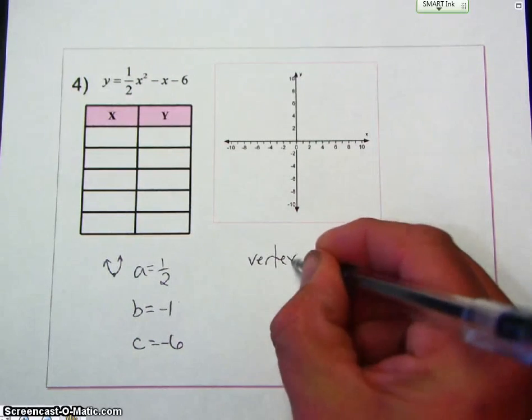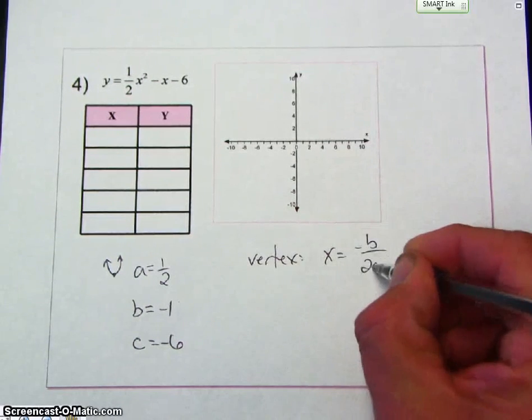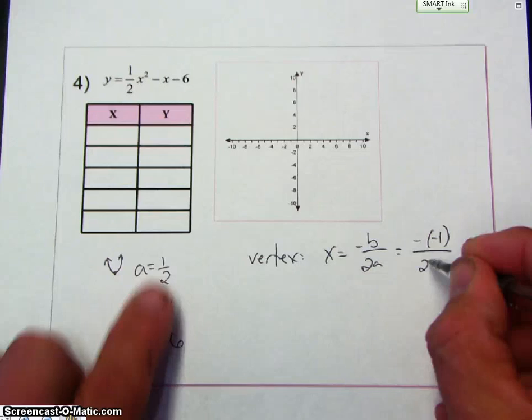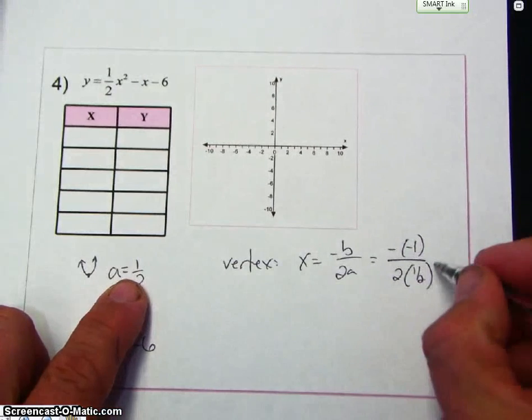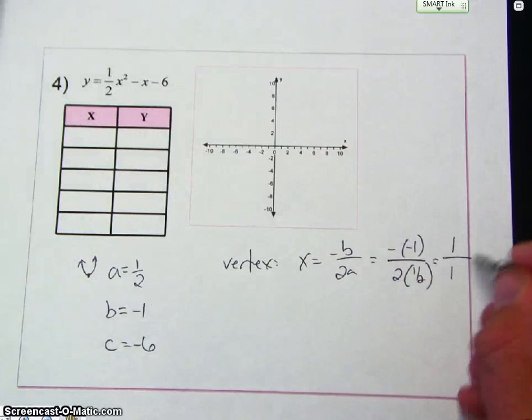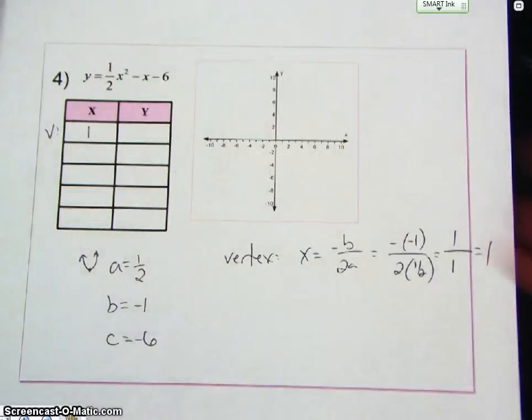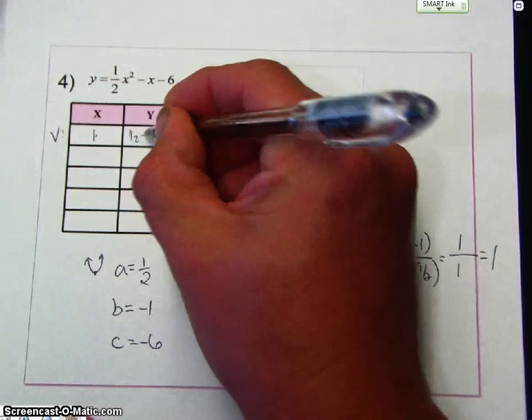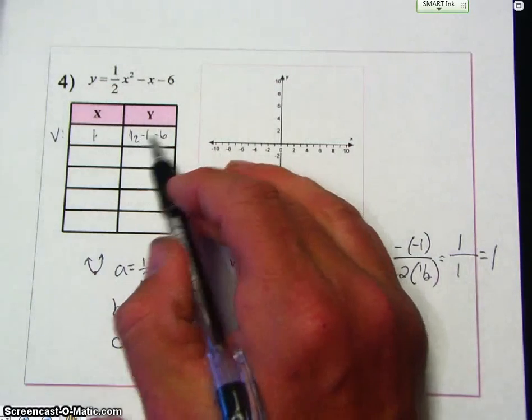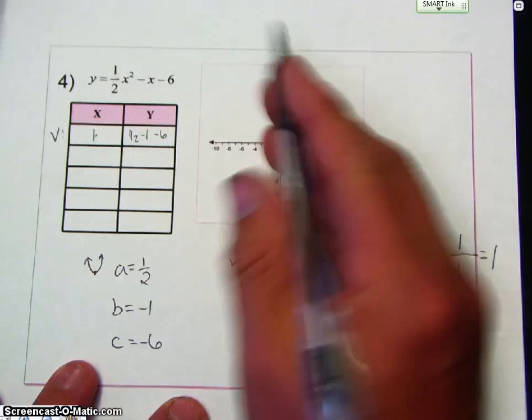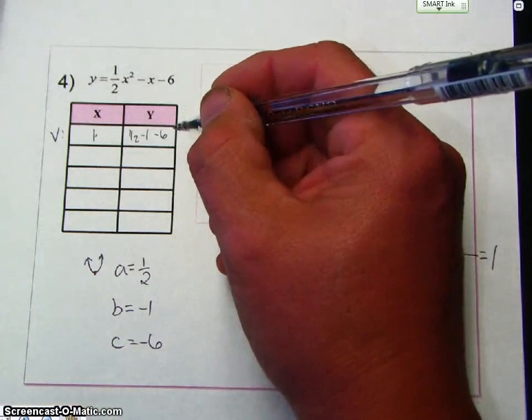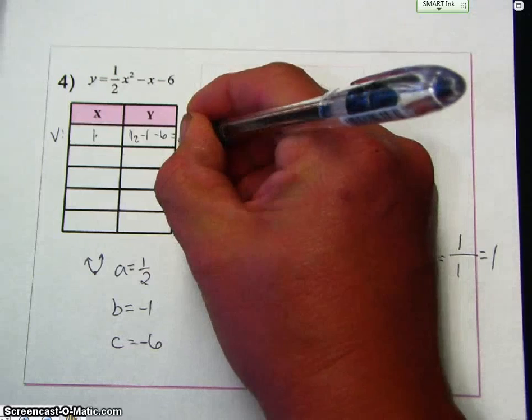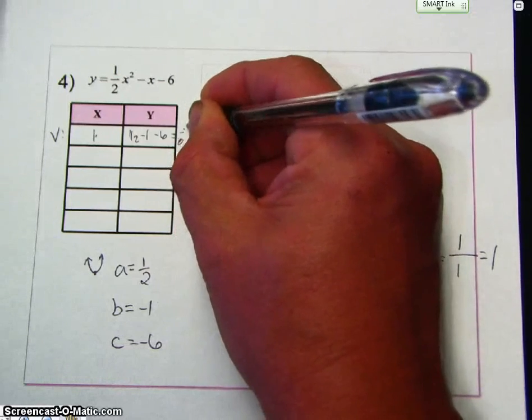So to find the vertex, x equals negative b over 2a. So it would be negative b, so it would be 1 times negative 1 over 2 times 1 half. So this is 1 over 1, which is 1. So my vertex, I put 1 in for x. So this would be 1 half minus 1 minus 6. So that's negative 7 plus 1 half, which gives me negative 6.5.